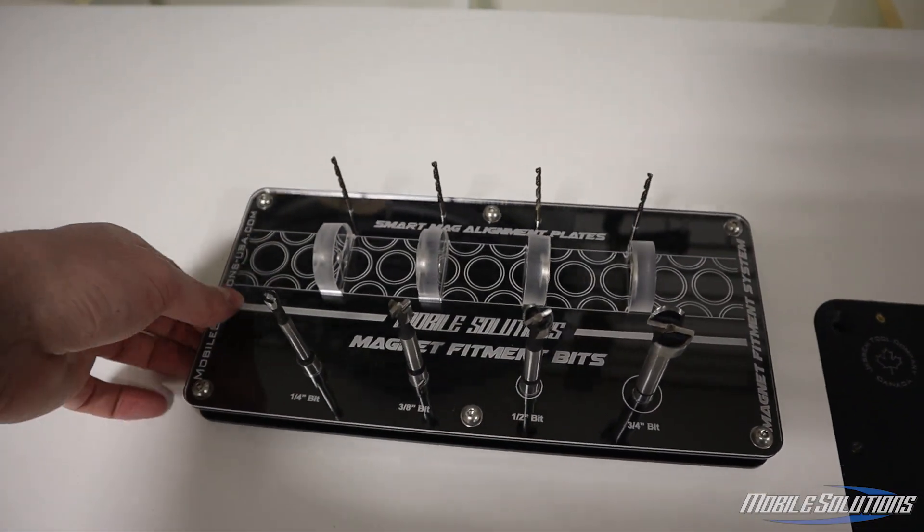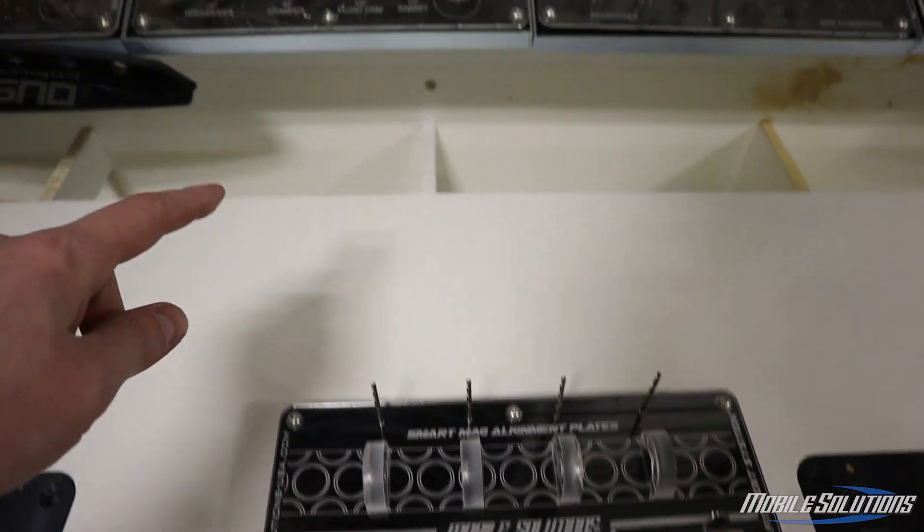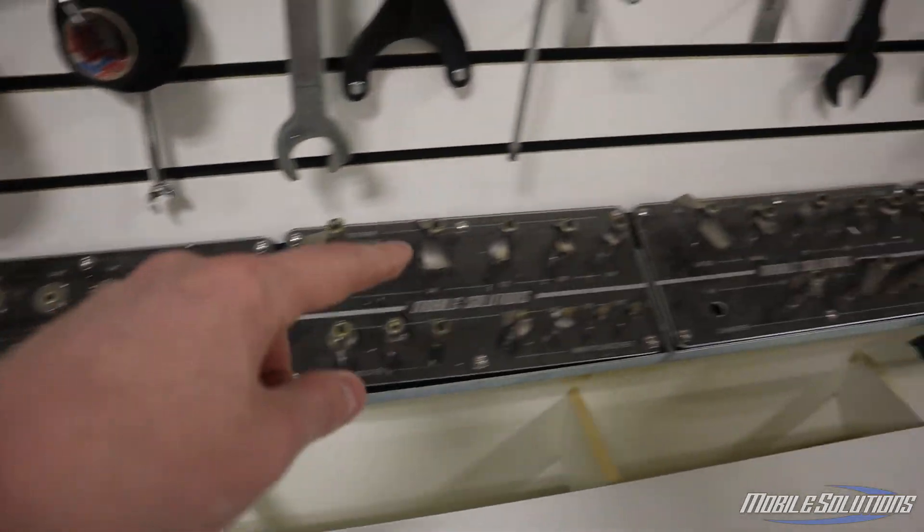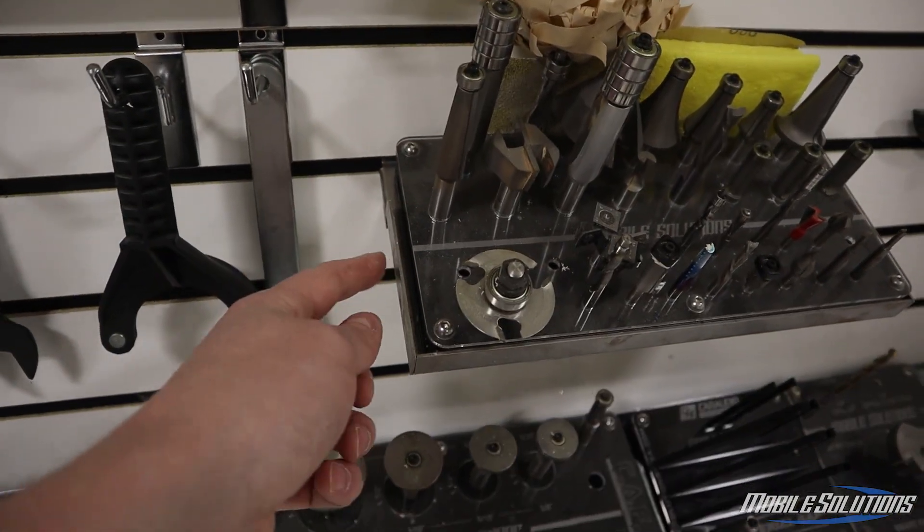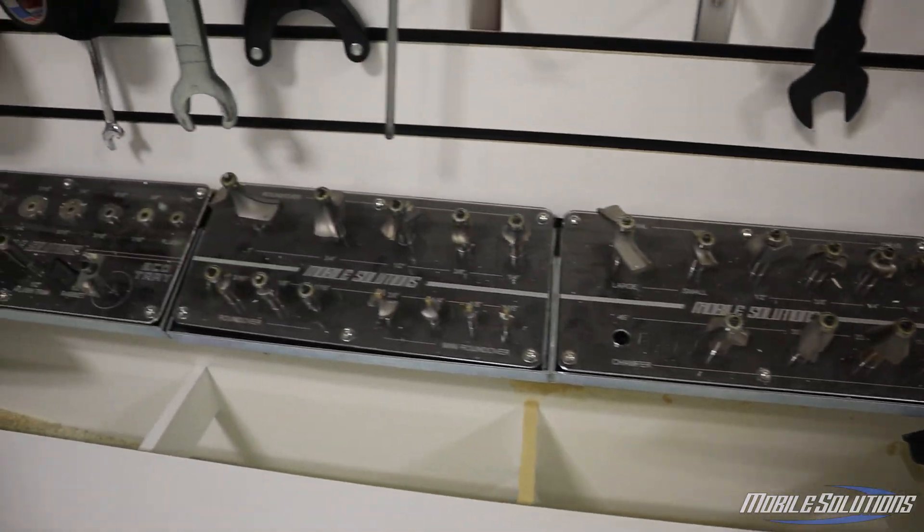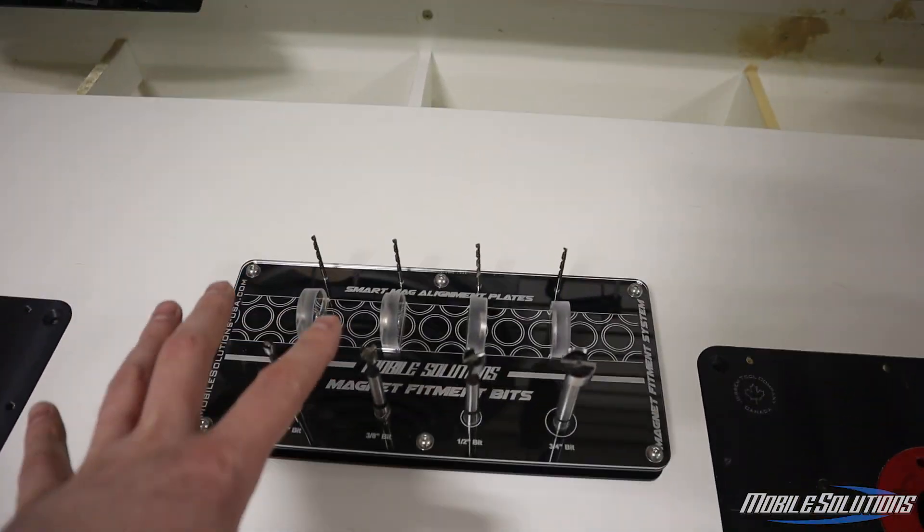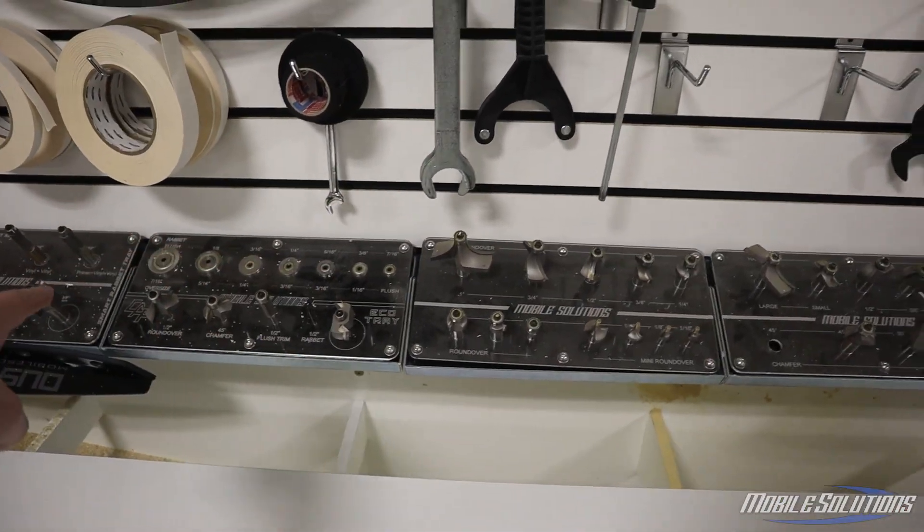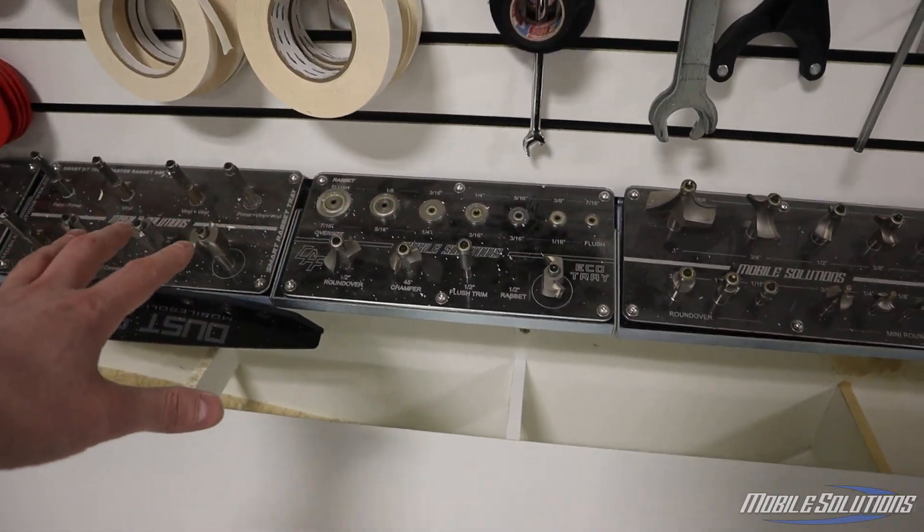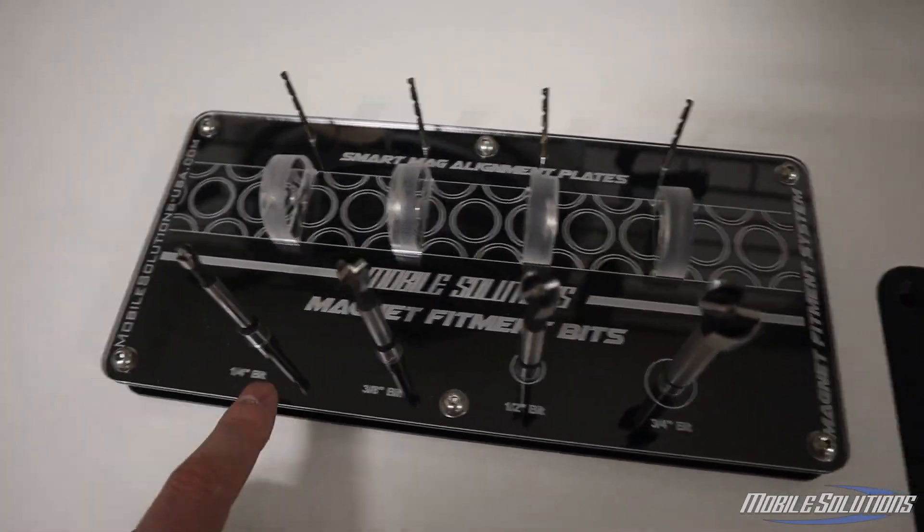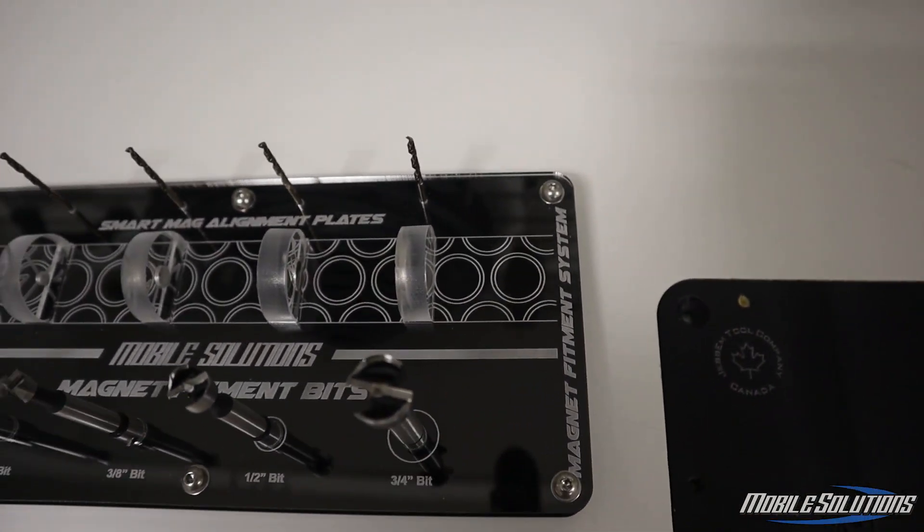You can see that the main tray that everything is organized into is the standard Mobile Solutions tray size. This fits all of the different slat wall tray holders as well as the grid wall tray holders that Mobile Solutions has. That way you can keep your shop nice and organized. You can have this alongside all of your other tools that you're using. It's very easy to access and you can quickly identify what each size is.